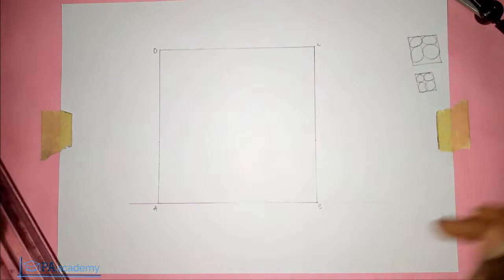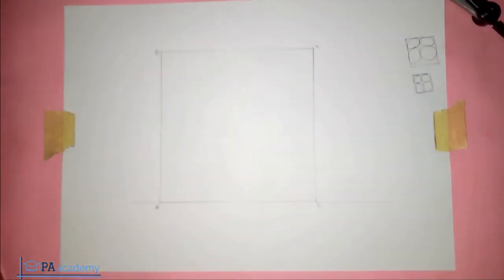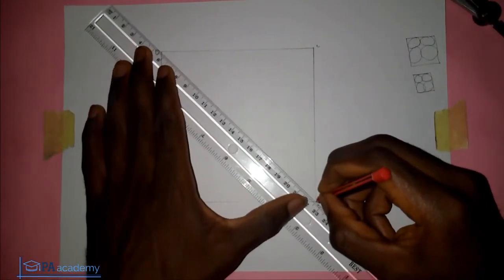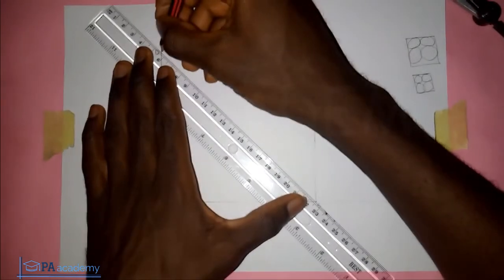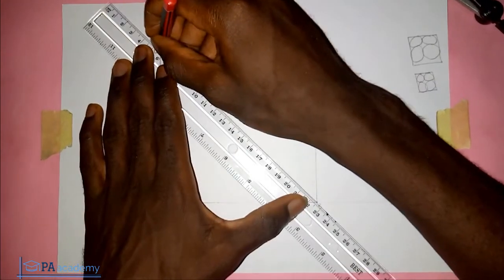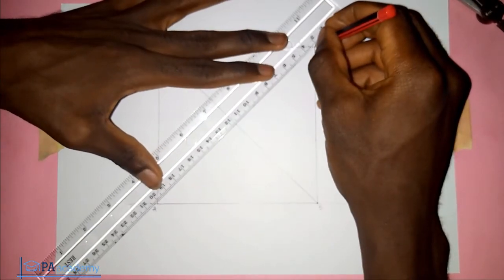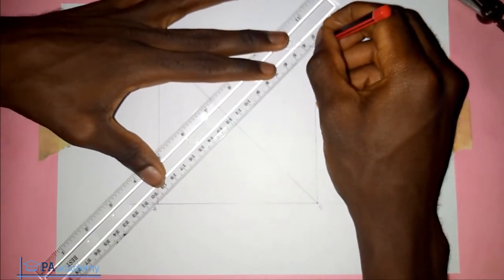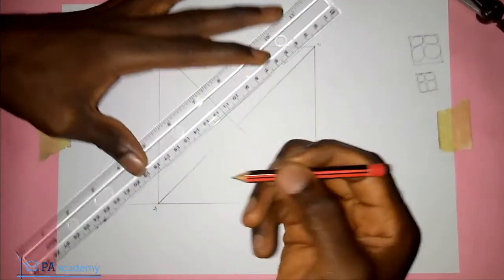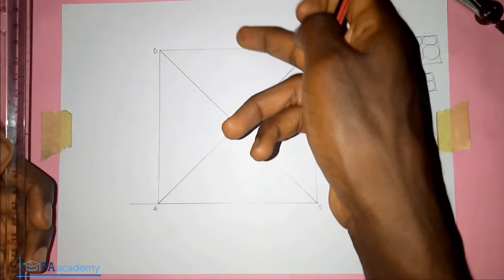The next thing I'm going to do is draw a diagonal from point A to point C, and then from point D to point B. So I'm going to draw that diagonal from point C to point A.